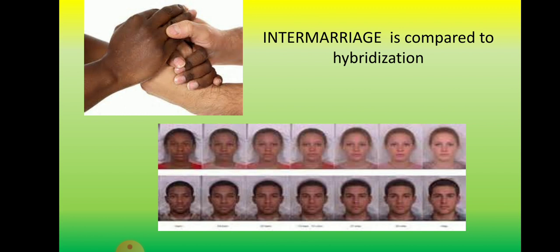Intermarriage is compared to hybridization in how the offspring, or the first filial generation, will look. There is what we call variation in the offspring depending on the contribution of the parents — 50% trait from the mother and 50% trait from the father. The same is true in plant breeding: 50% from the donor parent and 50% from the recipient plant.